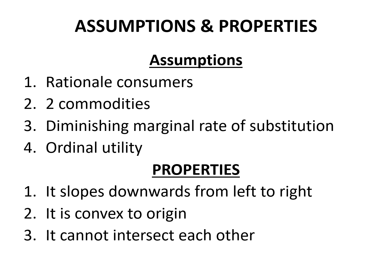The second property is that it is convex to origin. Indifference curves are convex to origin because when the consumer begins to increase use of one good over another, the curve represents the marginal rate of substitution. The marginal rate of substitution decreases due to the principle of diminishing marginal utility. Third, indifference curves cannot intersect each other, as higher and lower curves show different levels of satisfaction. A higher indifference curve shows greater satisfaction than a lower one; therefore, they will not intersect.